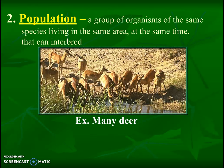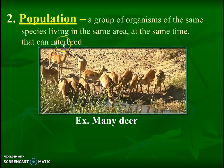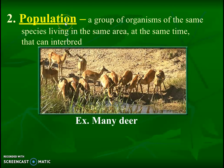The next term is a population. A population would be many deer as an example, and it has to be a group of organisms of the same species — so they ought to be the same exact type of deer, living in the same area at the same time, and they all have to be able to interbreed. Same area, same time, same species so they can interbreed — those are all very important aspects. Coloring key words in a different color is a great idea.